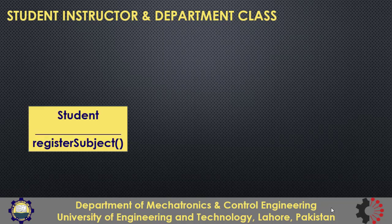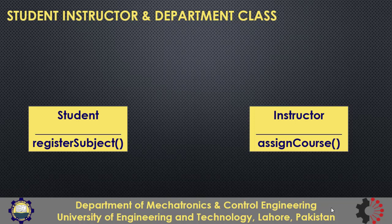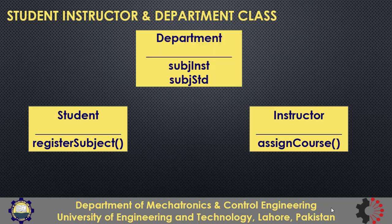We know that in the student class, we have a method registerSubject which adds subjects to the courses list of the student. Now in the instructor class, we'll create a method assignCourse to add courses to the courses list of the instructor that he will be teaching. Students registered in a course and the course taught by an instructor must create a link between the instructor and registered students. We'll do it by creating another class named Department which will have two class-level attributes: subject_instructor and subject_student.